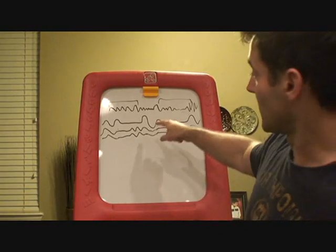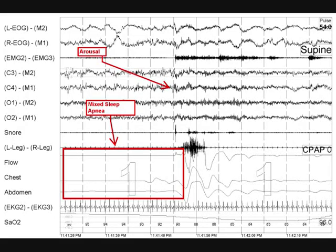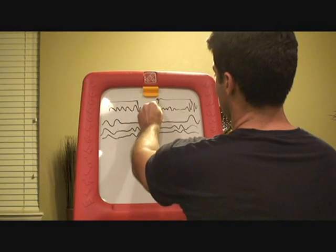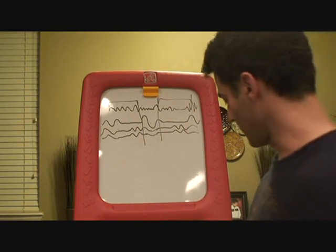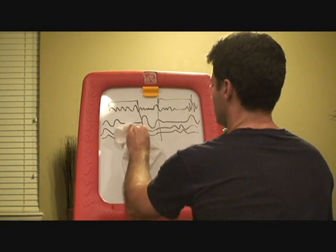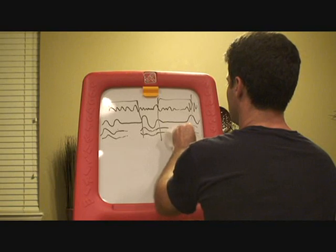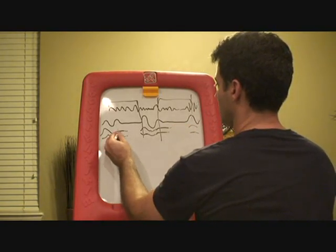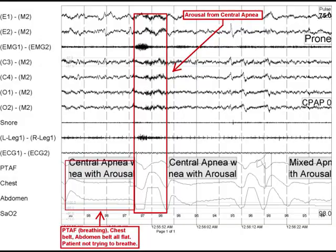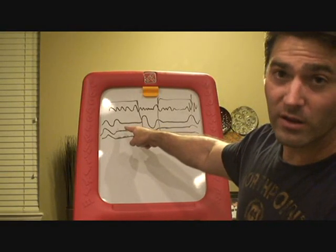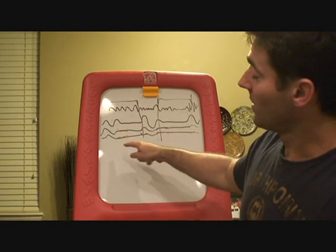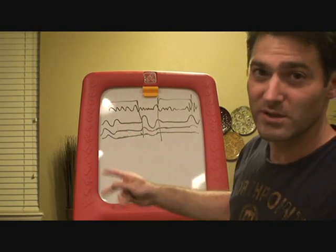That's what a mixed apnea looks like. Here's what it looks like during sleep. The next is a central apnea. With a central apnea, you're not breathing, and you're also not even trying to breathe.